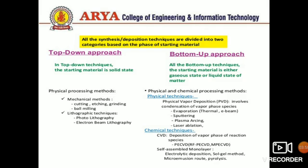These are the differences between the top-down approach and bottom-up approach. In the top-down approach, the starting material is in solid state. The physical and chemical processing methods include cutting, etching, grinding, and ball milling. Lithographic techniques used include photolithography and electron beam lithography.